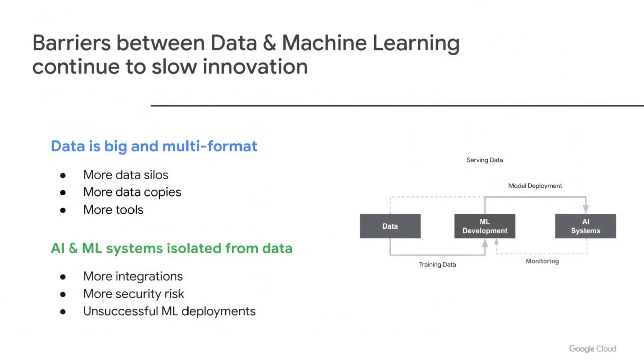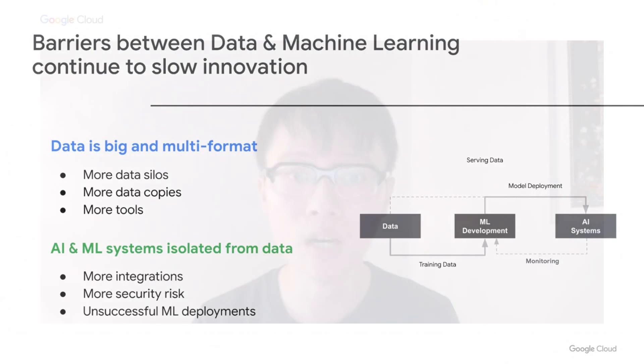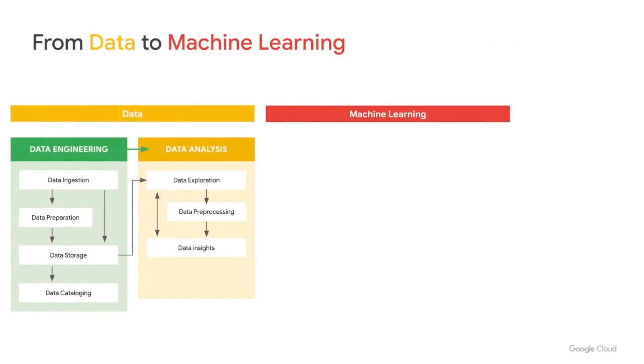Let's first talk about the problems from data to ML. For many organizations today, there's still a barrier between data and machine learning that slows down innovation. Data can be big, multi-formatted in different places, hard to discover, and AI/ML systems are often thought of as siloed from the data warehouses and data lakes of an organization. This results in slower speed and capacity to innovate quickly with AI and ML. To address this, we need a common understanding of how data flows from raw data to machine learning and downstream insights and activations.